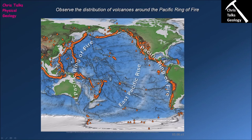In these ocean-ocean convergent regions, the elevated terrain is not due to crustal deformation — it is due to the sheer number of volcanoes building up the landscape. In contrast, at ocean-continent convergent boundaries, the mountain range is produced primarily by the continental crust buckling and deforming during the collision. This is a distinct morphological difference between the two boundary types.